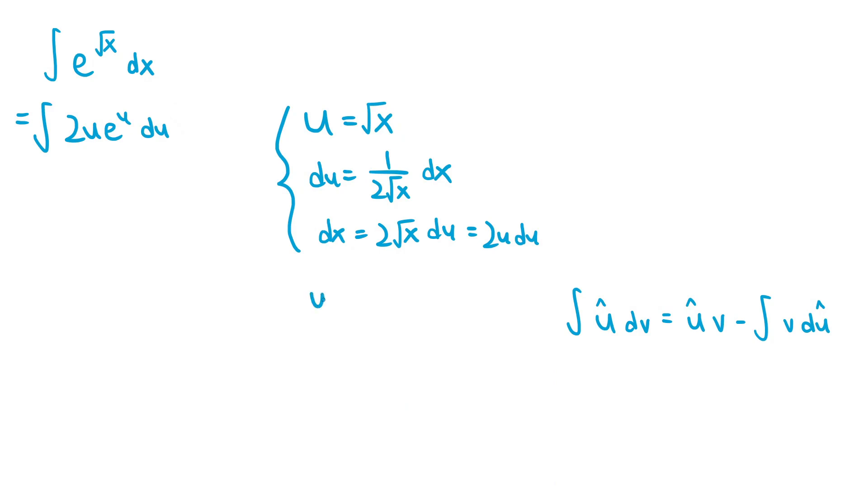We should let u hat equal 2u and dv equal e to the u du. This means du hat is equal to 2, and v is equal to e to the u.